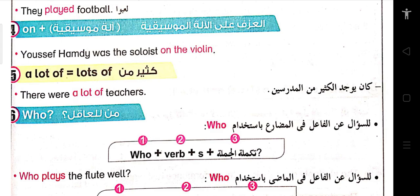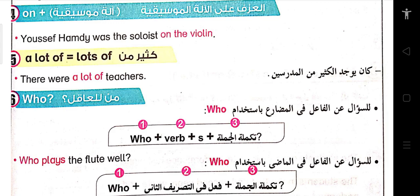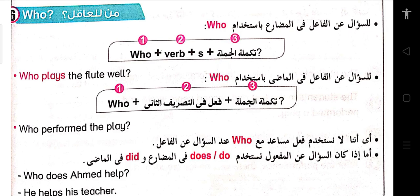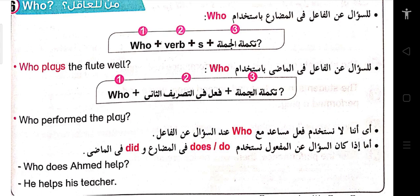Let's have the other kind, which is the object. If we wanted to ask about an object and use who: we will put who, then the helping verb, after that the subject, then the main verb, complete the sentence, then put a question mark. For example: Who does Ahmed help? Ahmed helps his teacher.